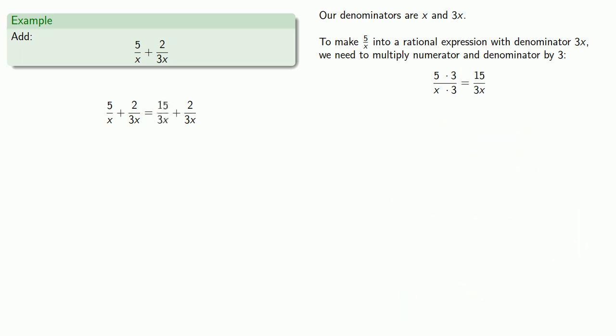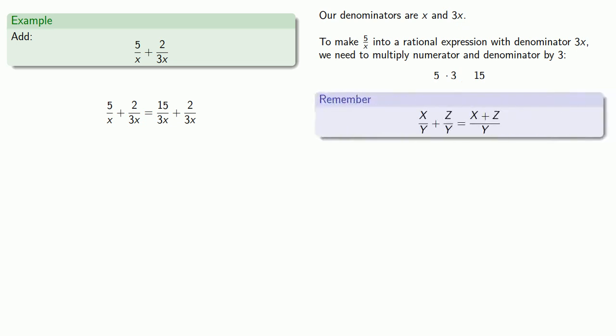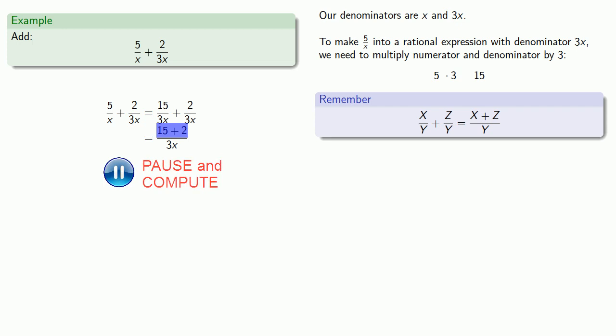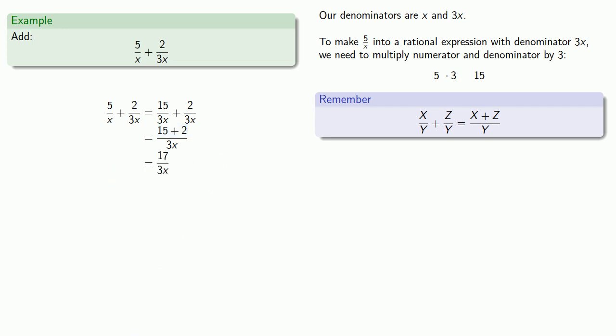And now our denominators are the same — 3x — so we can add the fractions by adding the numerators and keeping the common denominator. And we can simplify that numerator a little bit: 15 plus 2 gives us 17 over 3x.